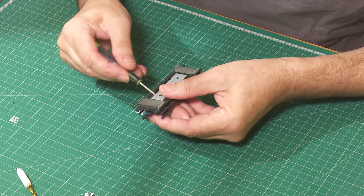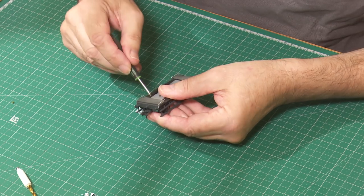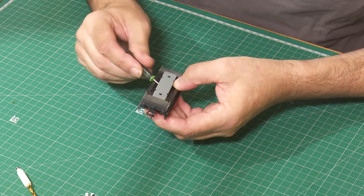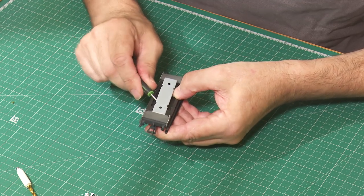Next, we remove the weight and this particular example put up a bit of a fight and we ended up shearing one of the locating spigots. That's no big deal, it'll all glue back in in the end.